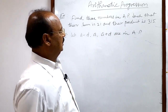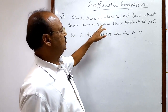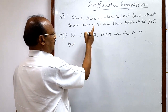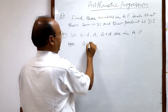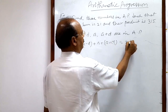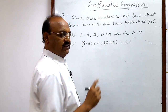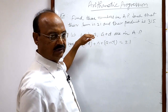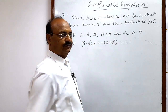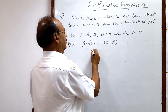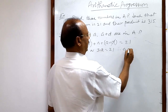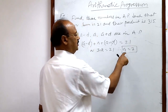Given that the sum is 21, so (a minus d) plus a plus (a plus d) equals 21. The benefit of taking three numbers in this form is that minus d and plus d cancel out, giving us 3a equals 21, and therefore a equals 7.